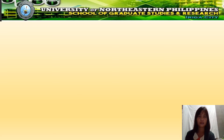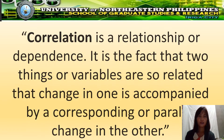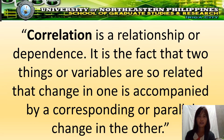What is correlation? Correlation is a relationship or dependence. It is the fact that two things or variables are so related that changes in one is accompanied by a corresponding or parallel changes in the other.